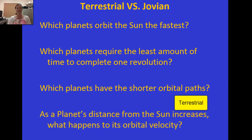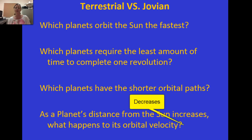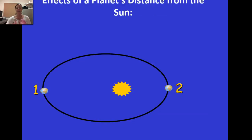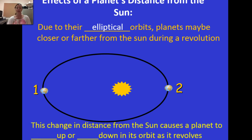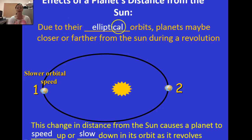As a planet's distance from the sun increases, what happens to its orbital velocity? As you saw in the animation, as the planet moves away from the sun, its orbital velocity decreases — it moves slower in its path. Due to the elliptical shape of the orbit, a planet may be closer or farther from the sun during its revolution, which causes it to speed up or slow down. A planet at position one farther from the sun will move slower, while at position two closer to the sun it will move faster.